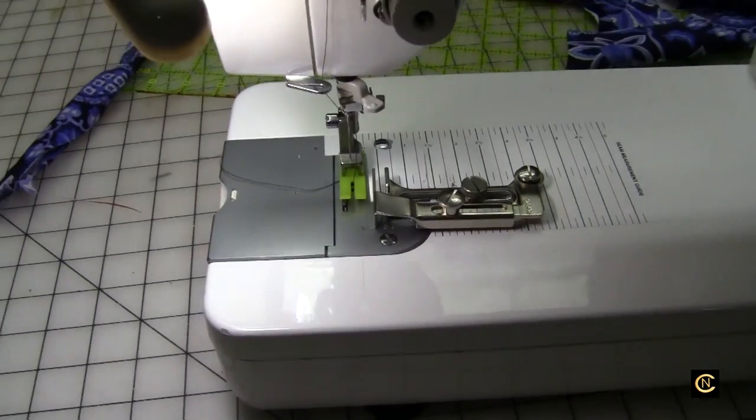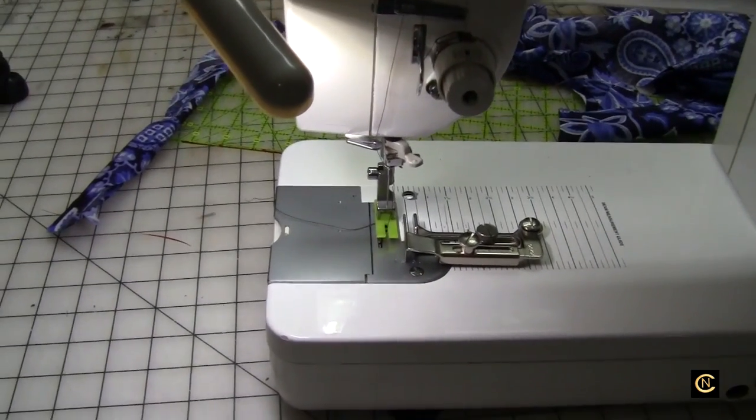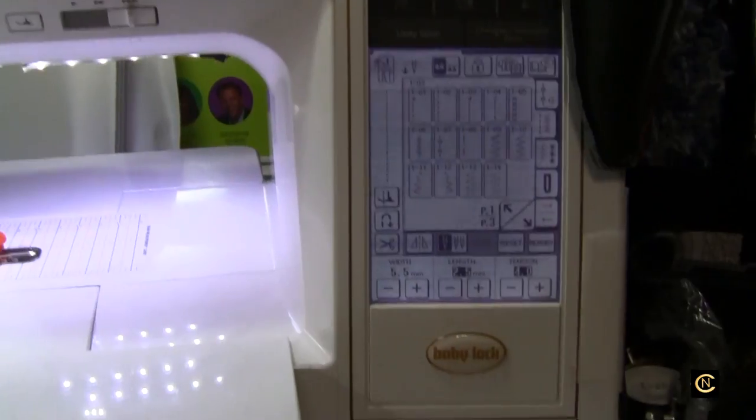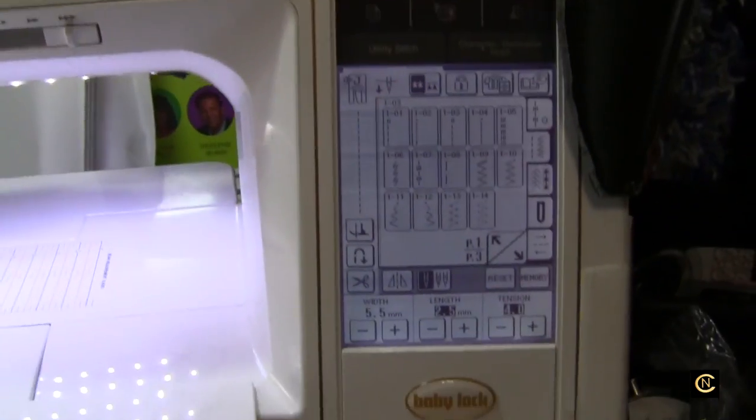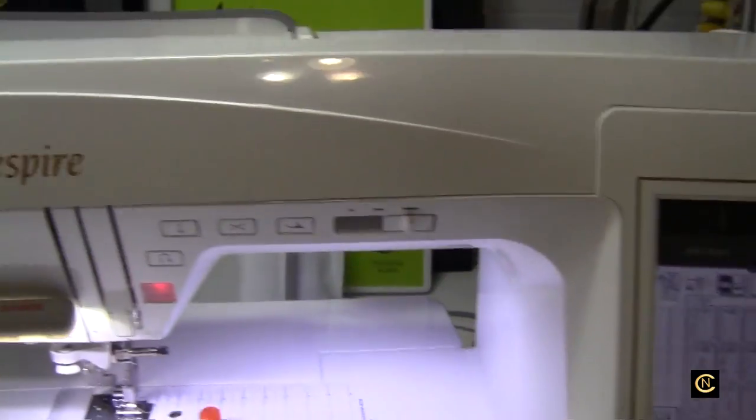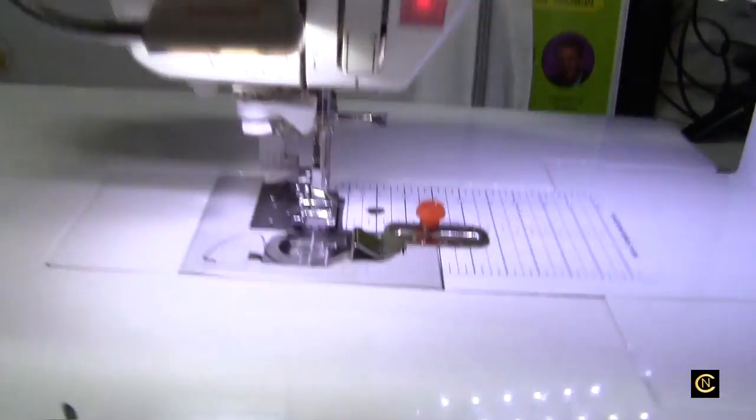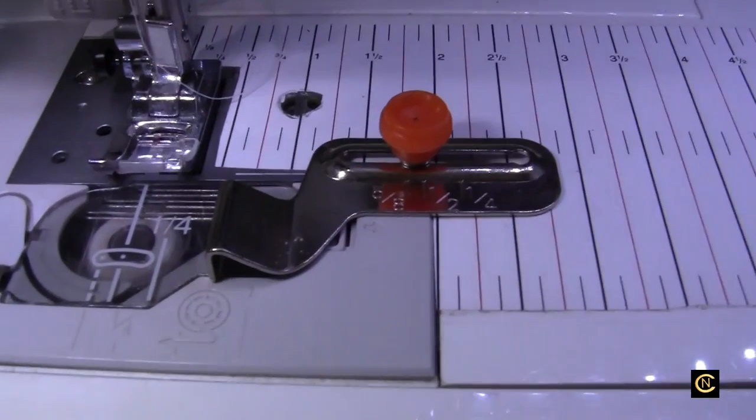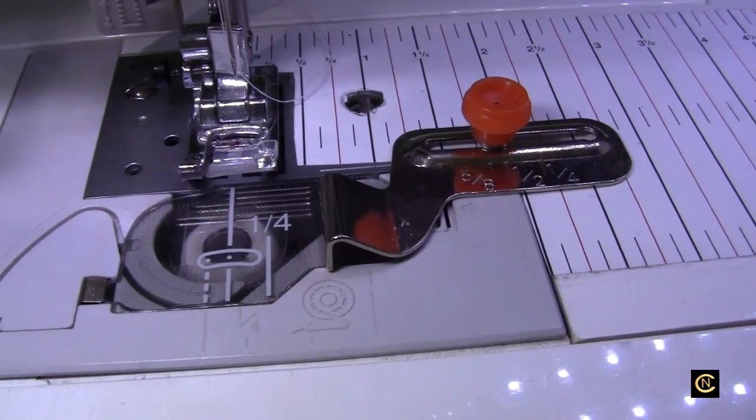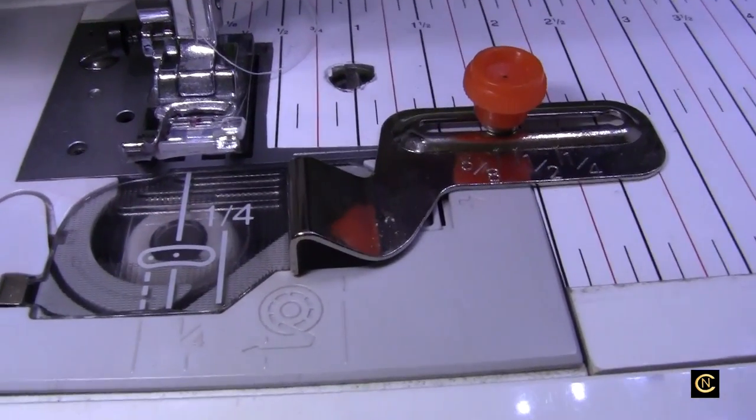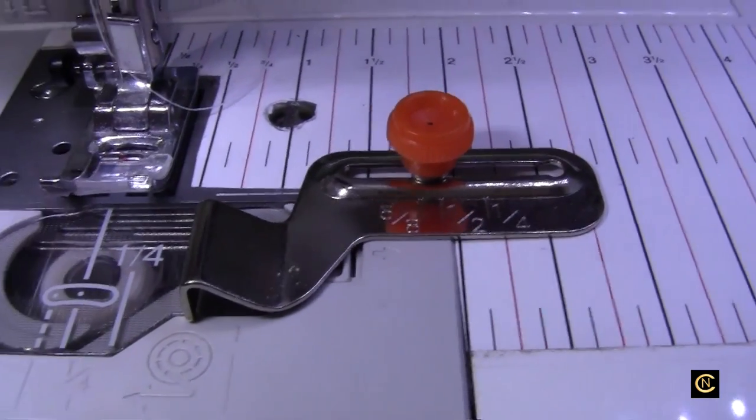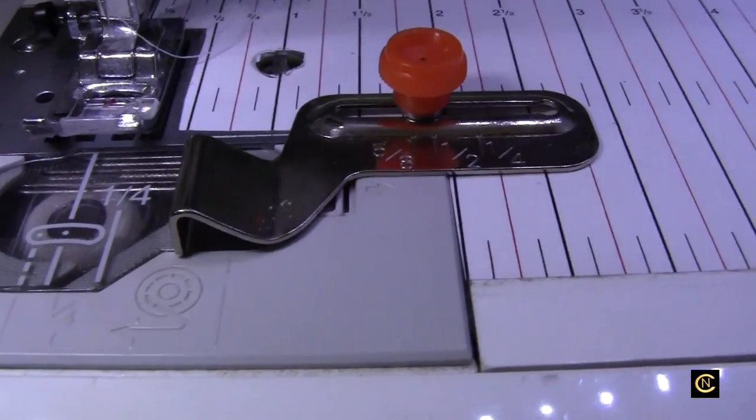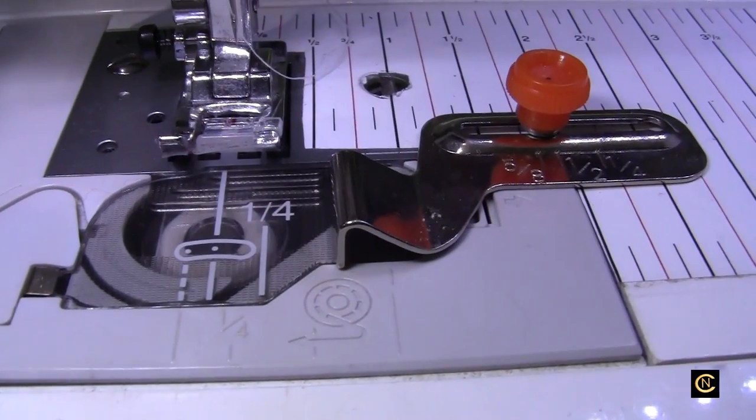Now I'll show you my Baby Lock machine. Here's my Baby Lock Aspire, which Brother has a model like it as well. Here's the deal—that industrial attachment will not work on this machine because the screw hole is so much smaller. But you see the seam guide I have on there? That's a dedicated seam guide made by the manufacturer of Brother and Baby Lock.